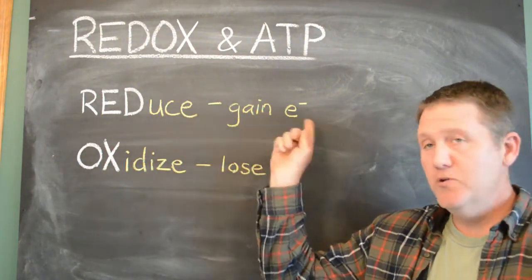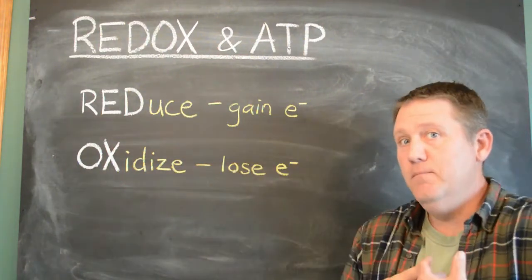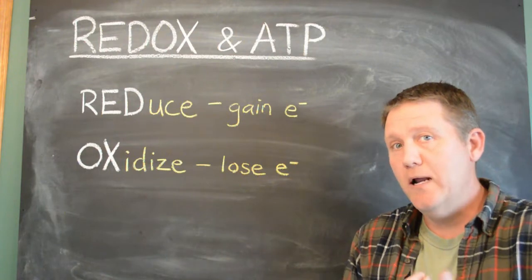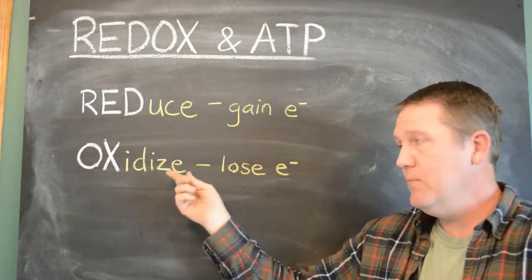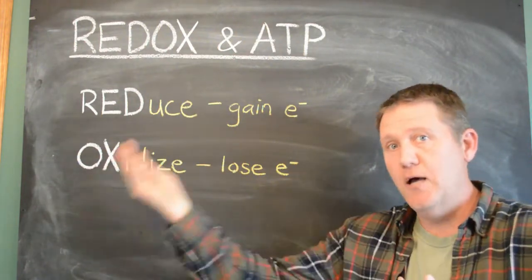So reducing means you gain electrons, and if you gain them, then you had to have gotten them from somewhere else, and so the other thing must have been oxidized and lost electrons.